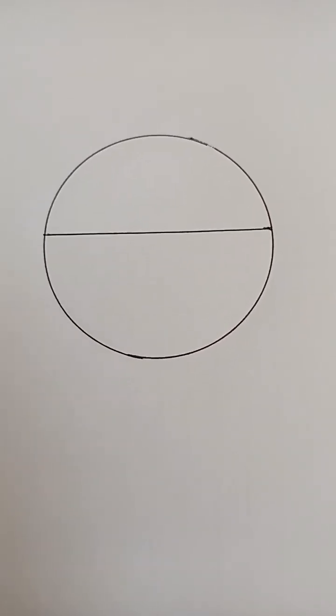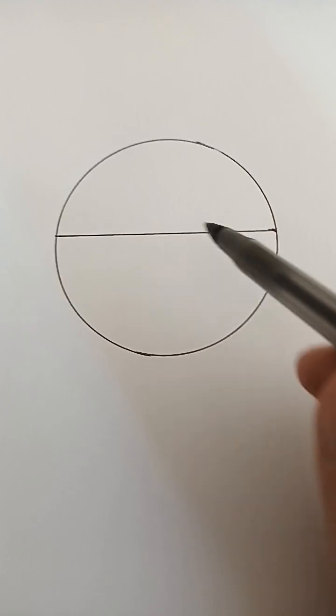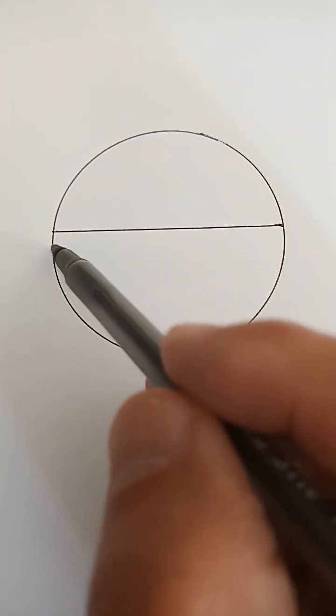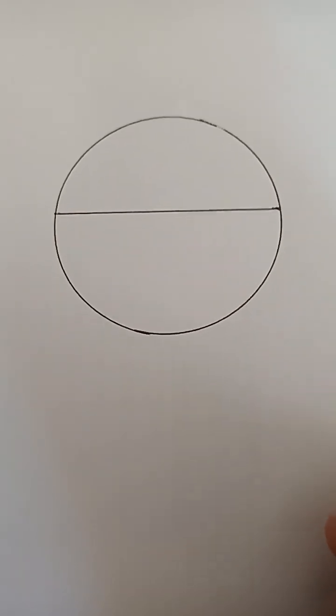So what you're looking at there is a circle with what is supposed to be a diameter. I guess I just drew it a little off. I should have drawn it there, but it doesn't matter. Let's pretend that this is a diameter.